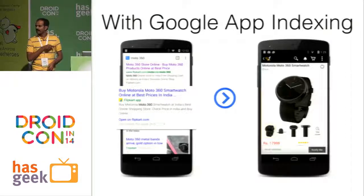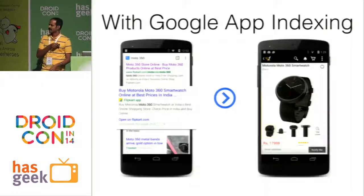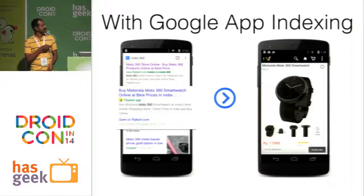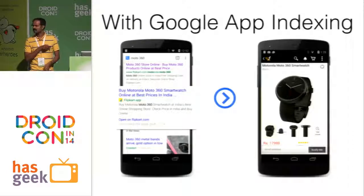That way, the Google bot crawls your website, maps it with the content in your app, and when performing a search it maps both and shows you the result where you can see the app in the Google search results.